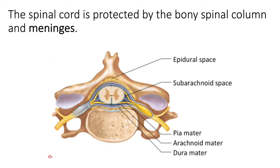The innermost layer is called the pia mater. It's a very glassy, delicate layer that surrounds the spinal cord. These three meningeal layers are continuous with the three meningeal layers that surround the brain, so the entire central nervous system is surrounded by the meninges.